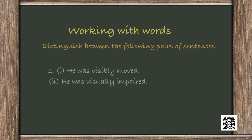Next, we have distinguishing between pairs of sentences. 'He was visibly moved' as opposed to 'he was visually impaired' — so visibly versus visually. Visibly essentially means something that you can see — he was visibly moved means you could see a change of expression on somebody's face, something you can visibly see. Anything that you can see is visible, and that's where visibly comes in.